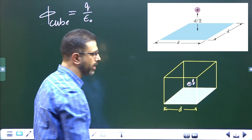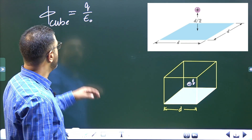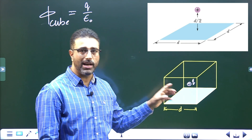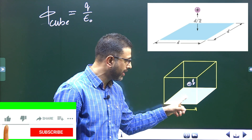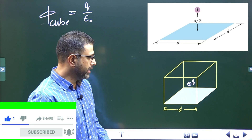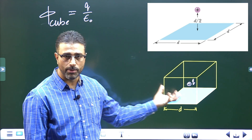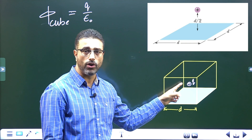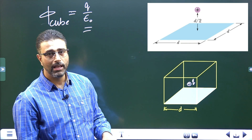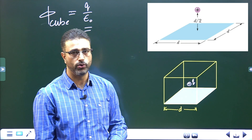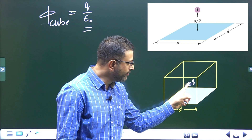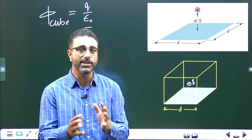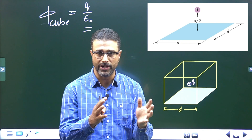The q enclosed is just q, which is a proton. So this is the flux through the cube. But we have to find out flux through just this one face — we were not asked to find flux through the entire cube. We will use symmetry here. Since the charge is at the center of the cube, this total flux will be equally shared by the six faces of the cube. Had the charge been somewhere not at the center, flux wouldn't be equally shared — that's the reason we have to select the closed surface very smartly, in a symmetric way.